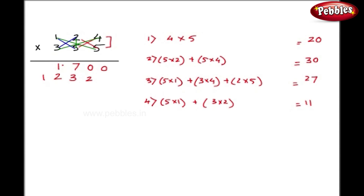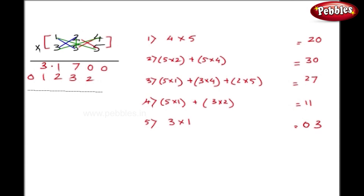And as the last step, that is the 5th step, I will multiply the last column, that is 3 into 1, and here I get 3, so I write 03. I got my answer in 2 lines and I have to just add them traditionally.